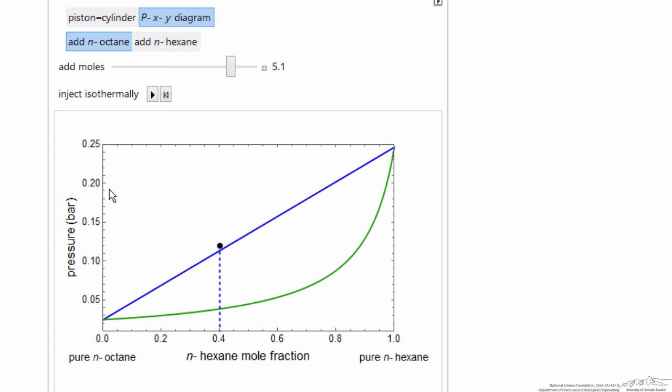If I instead inject hexane, I move in the other direction, and the idea is that you can use this to help understand behavior for vapor-liquid equilibrium.